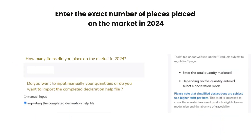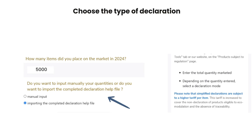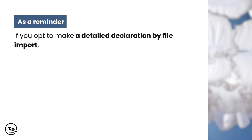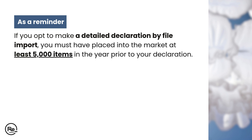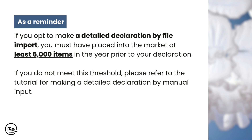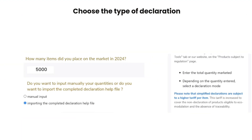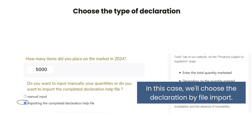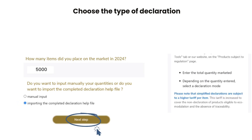Once you have selected the product categories, enter the exact number of items you placed on the market in 2024. Next, choose the type of declaration you wish to make. If you want to make a detailed declaration by file import, you must have placed into the market at least 5,000 items in the year prior to your declaration. If you do not meet this threshold, please refer to the tutorial for making a detailed declaration by manual inputs. For this guide we will demonstrate how to make a declaration with file imports. Click on next step to proceed.